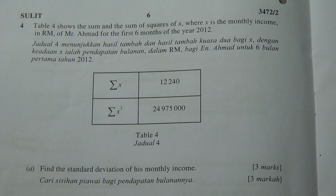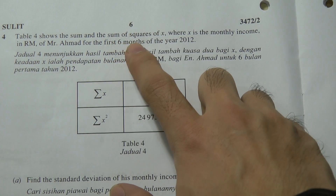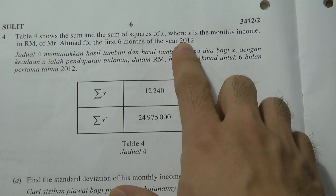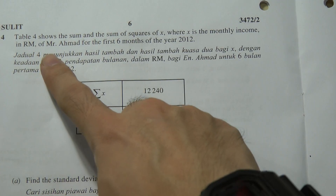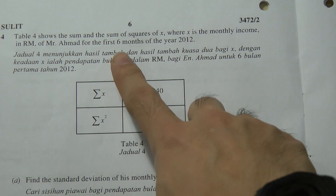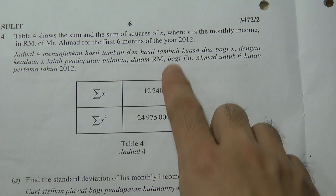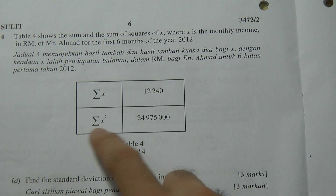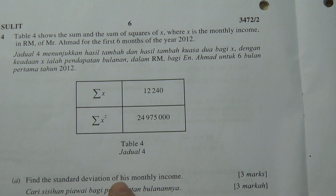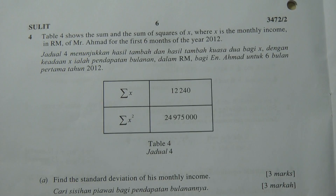Question four is a statistics question. The table shows the sum of x and sum of x squared, where x is the monthly income in RM for Mr. Ahmad for the first six months of the year 2012. The question asks you to find the standard deviation of his monthly income.